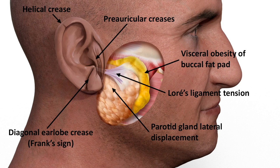With increasing facial visceral fat deposition, further auricular traction takes place. Therefore, the auricle is drawn inwards towards the point of Lohr's ligament anchorage at the base of the tragus. Such inward tension causes the internal collapse of the rigid cartilaginous helix, subsequently leading to its creasing at its weakest points, which creates the paired creases of the helix.